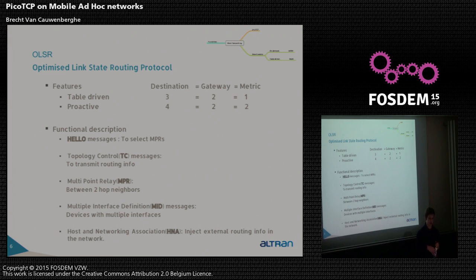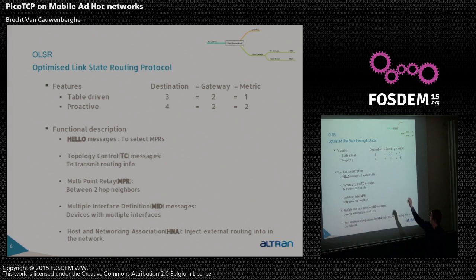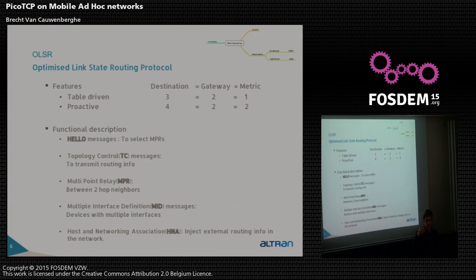One of the table-driven protocols is OLSR, the Optimized Link State Routing protocol, as described in an RFC. It proactively builds routing tables before data needs to be sent. For example, a routing table entry to reach destination three would hop via gateway two with a metric of one hop, and it builds up all routing information in this way.